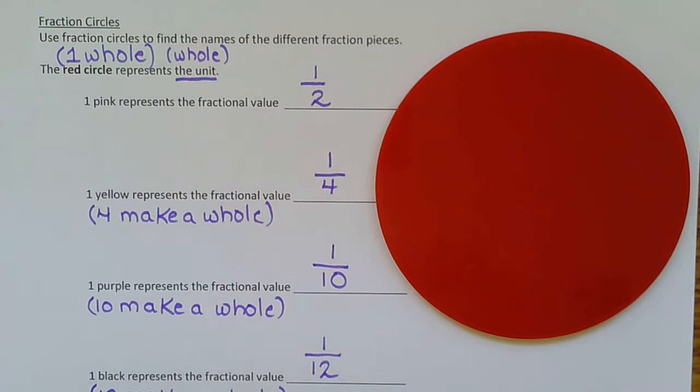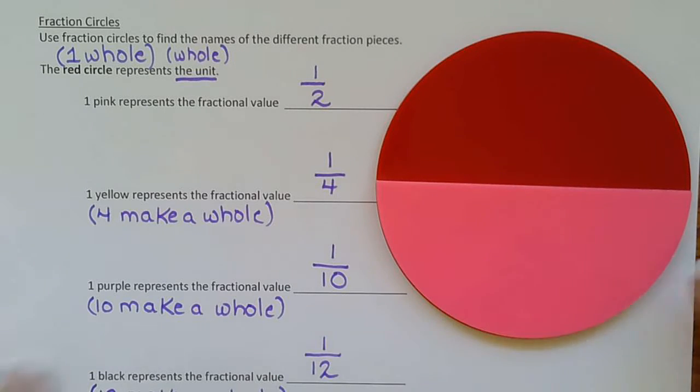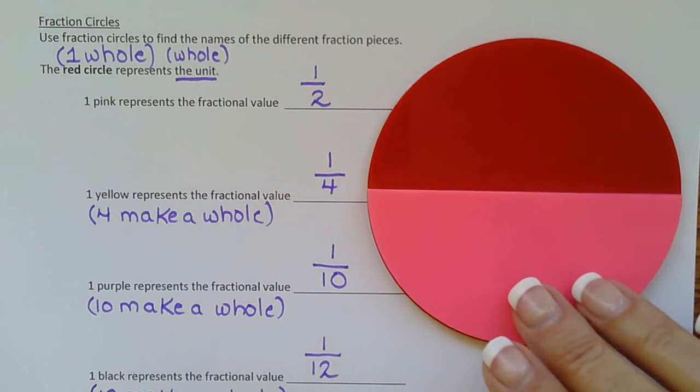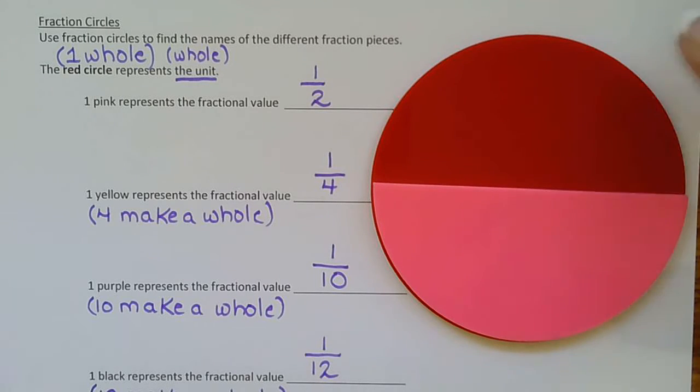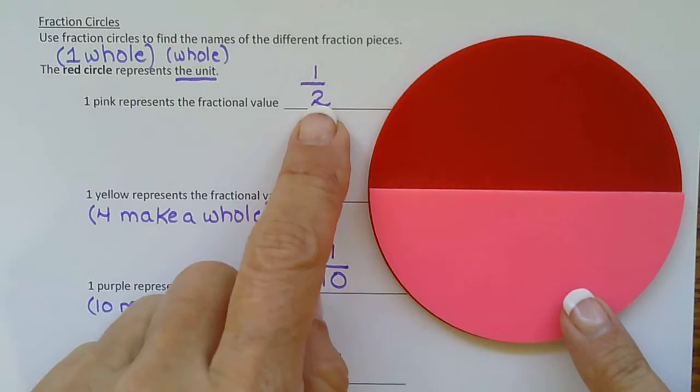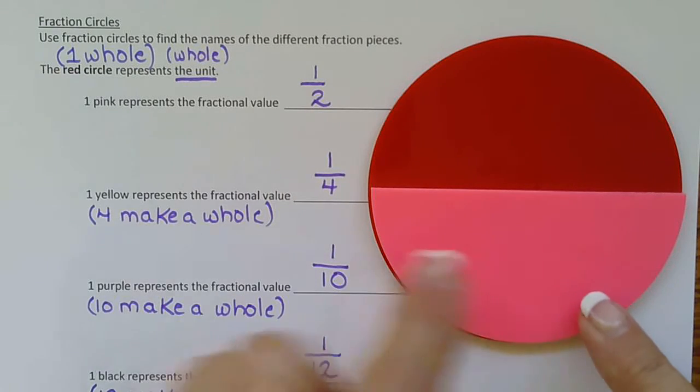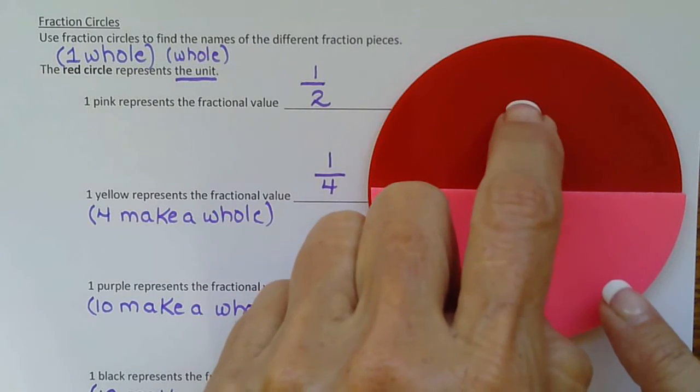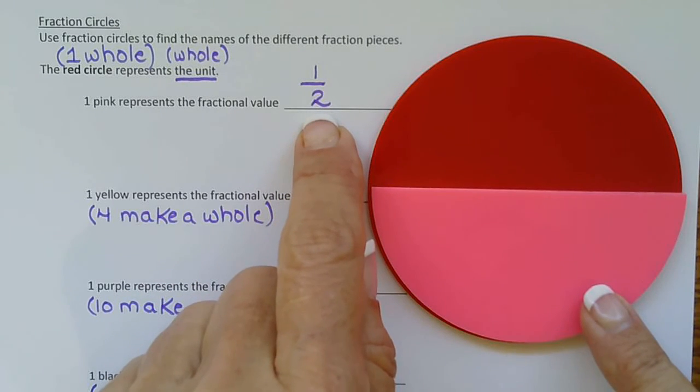And it says a pink represents what fractional value. So here's the pink. And this is really fun to do in class. I'm sad we didn't get to do it because we have manipulatives for everyone and you can sit and work on it at your table. But since we're at home, we'll just have to be happy with what we have. So what part of the red whole is pink? And I think everybody agrees it's half. Half of the whole is the pink piece. And another way you can look at it is it takes two pinks to make a red. That's how we know pink is one half.